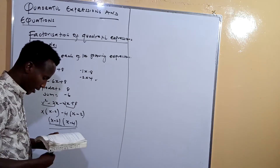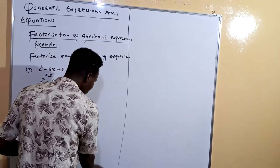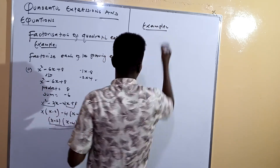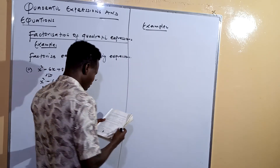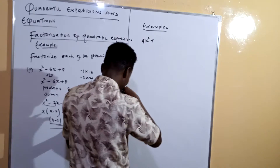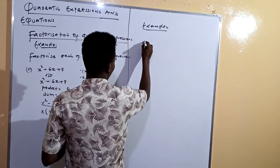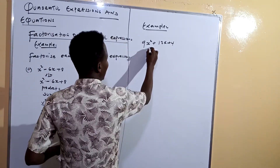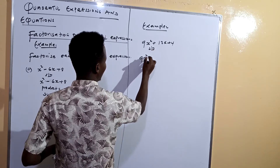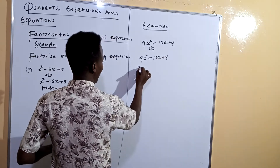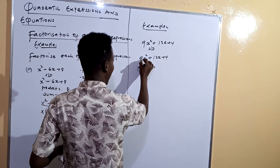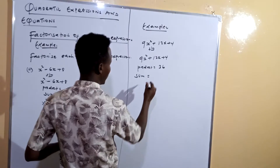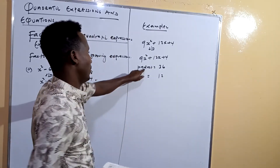Let me add Example 2 before we proceed. Example 2 is: 9x squared plus 12x plus 4. Coming to the solution — the product is 9 times 4, which is 36, and our sum is 12. The product is positive and the sum is also positive, so we take two positive numbers.